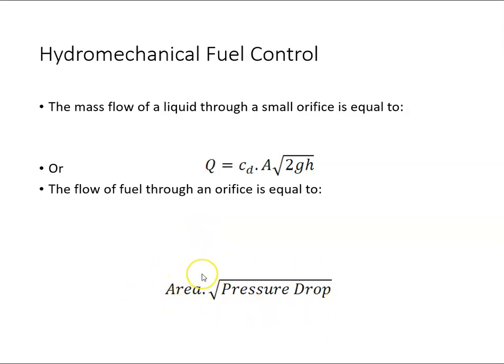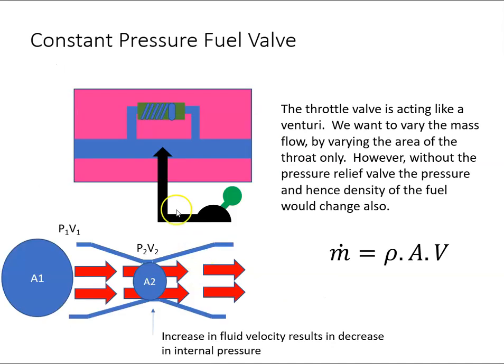Here is our throttle valve. As the pilot moves the throttle, he's varying this area here. As the throttle opens, this area is getting bigger, and as it closes this gets smaller. That's what the throttle valve is doing.